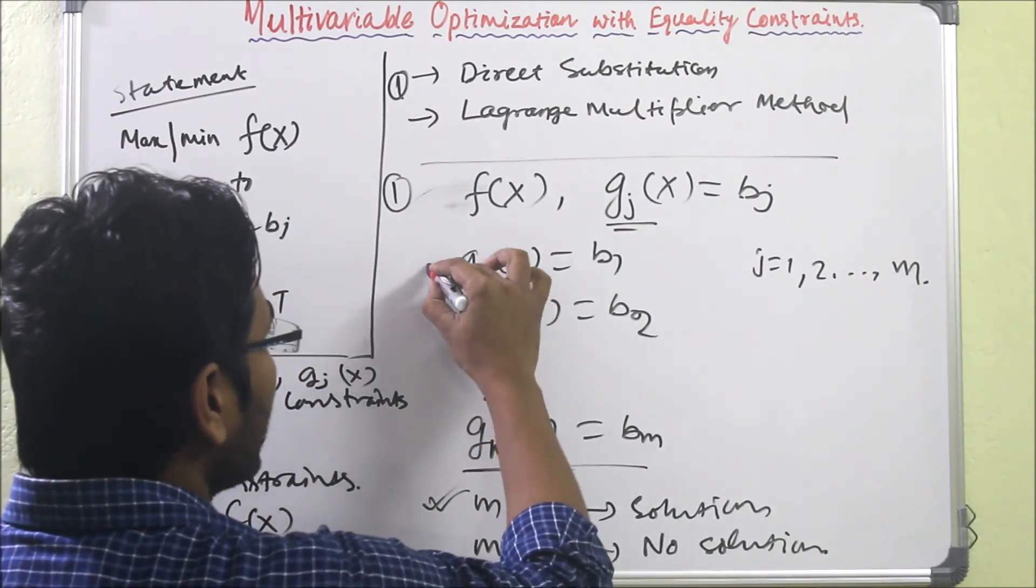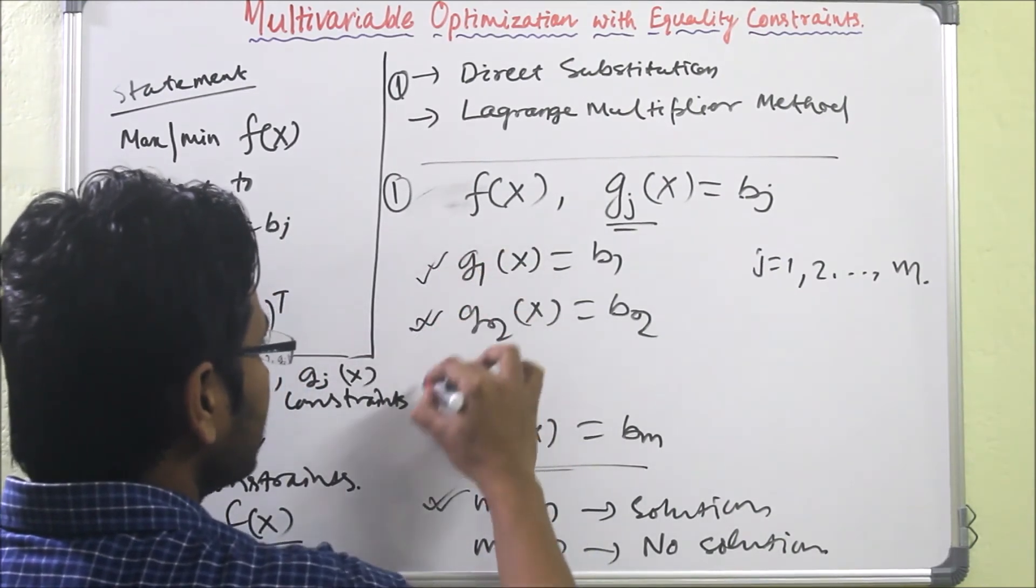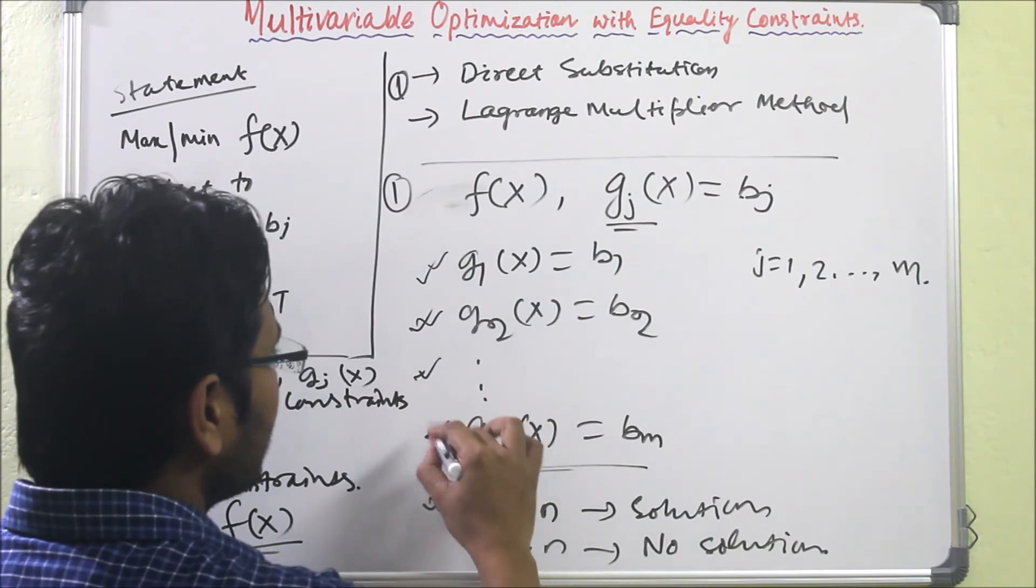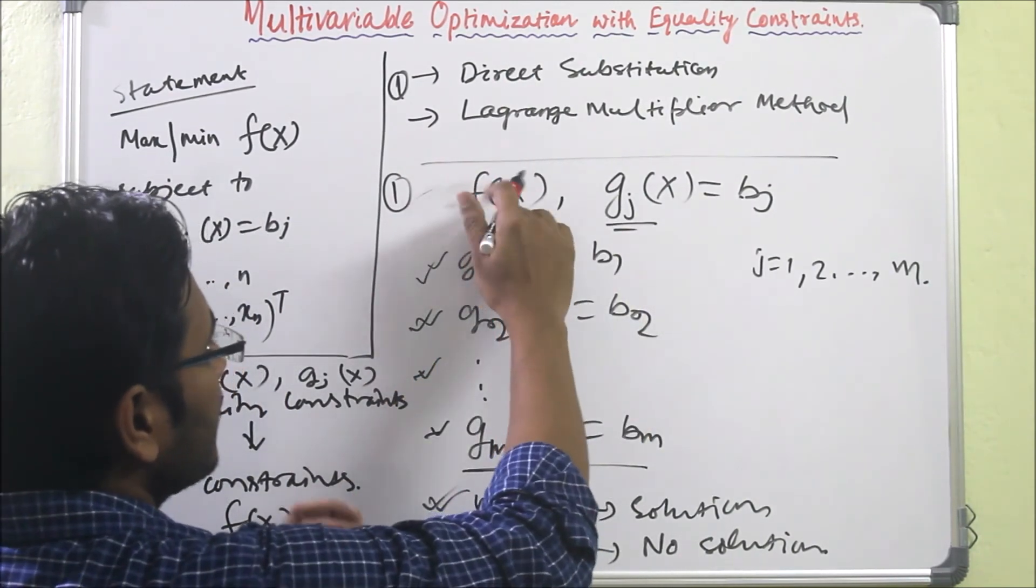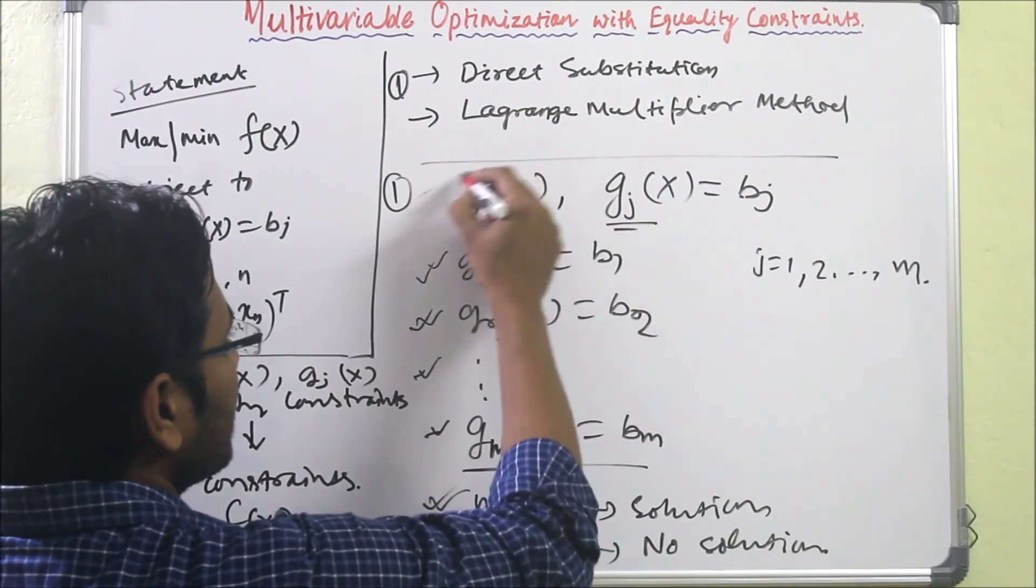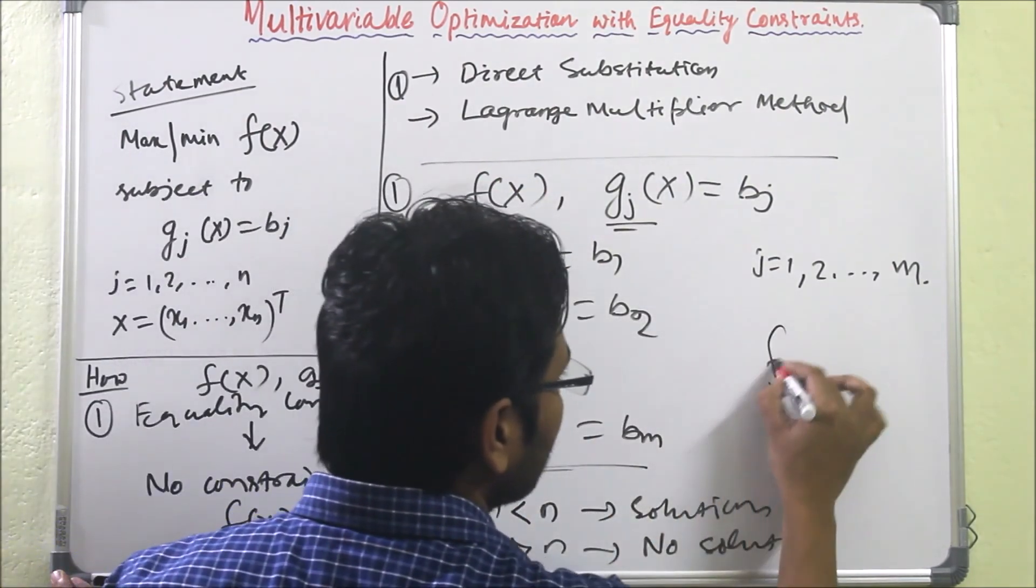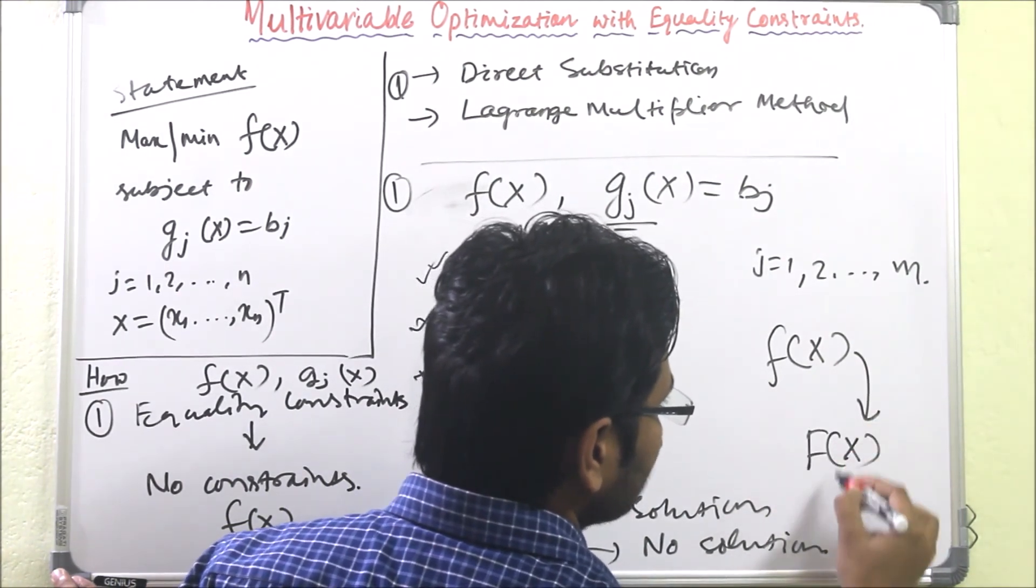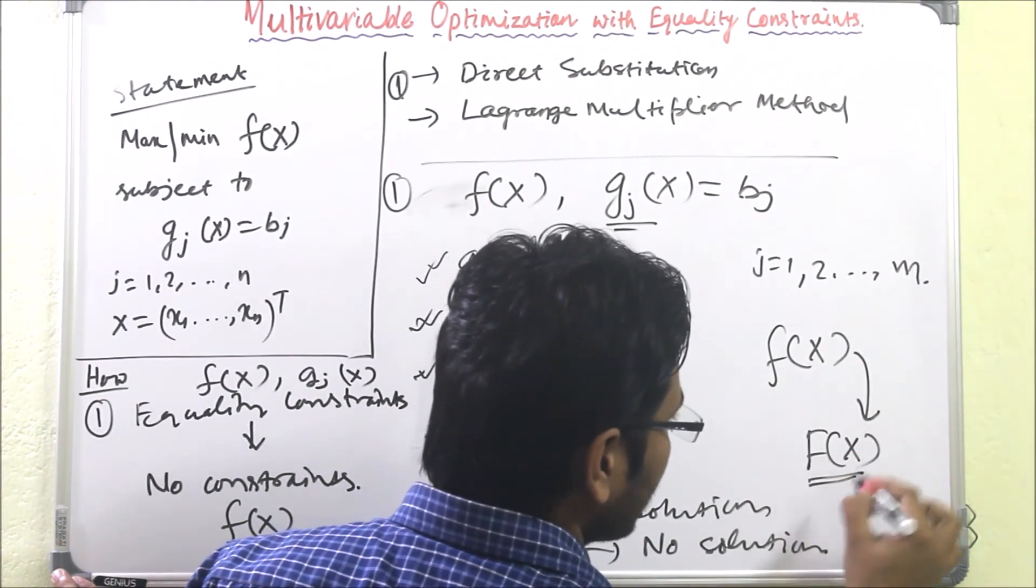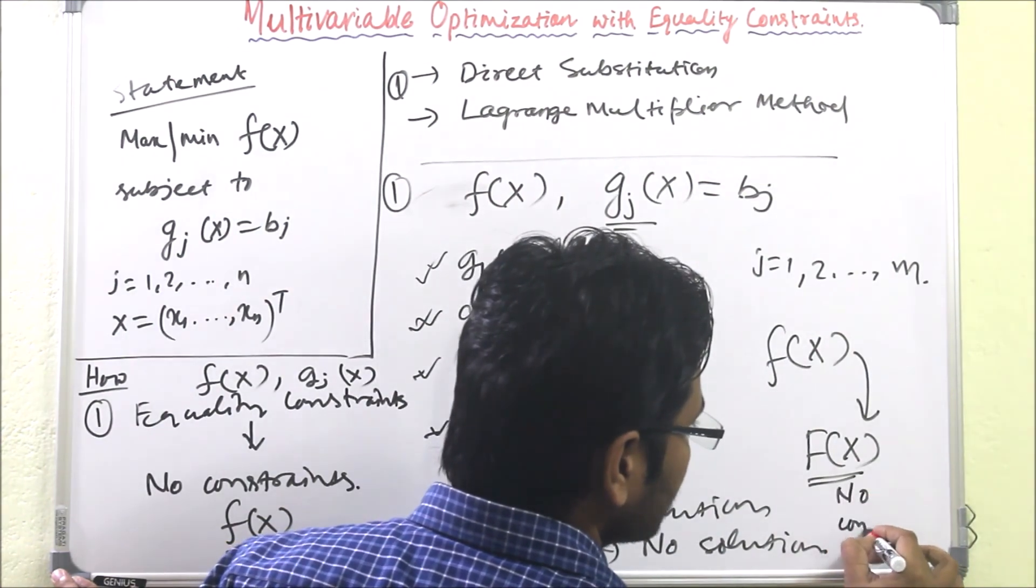Then how to use? We have to consider these g values, then substitute this g value into f. Then we have to convert this to some new variable, f(x), and this problem will have no constraints.